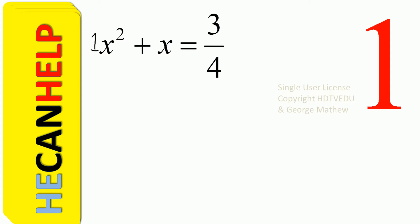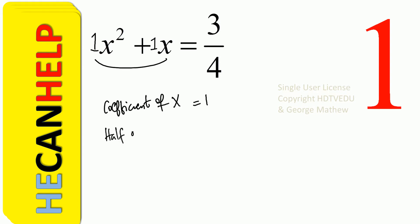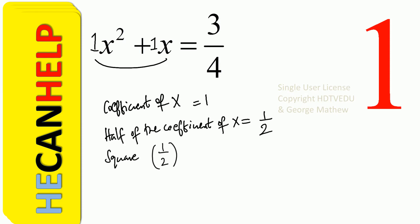then we can complete the square on the left. What is the coefficient of x? It is just 1. And what is half of the coefficient of x? It is 1 divided by 2. Then we square it and what do we get? 1 over 2, the whole thing squared, and that is 1 over 4. Then what do we do? Add to the left and add to the right.